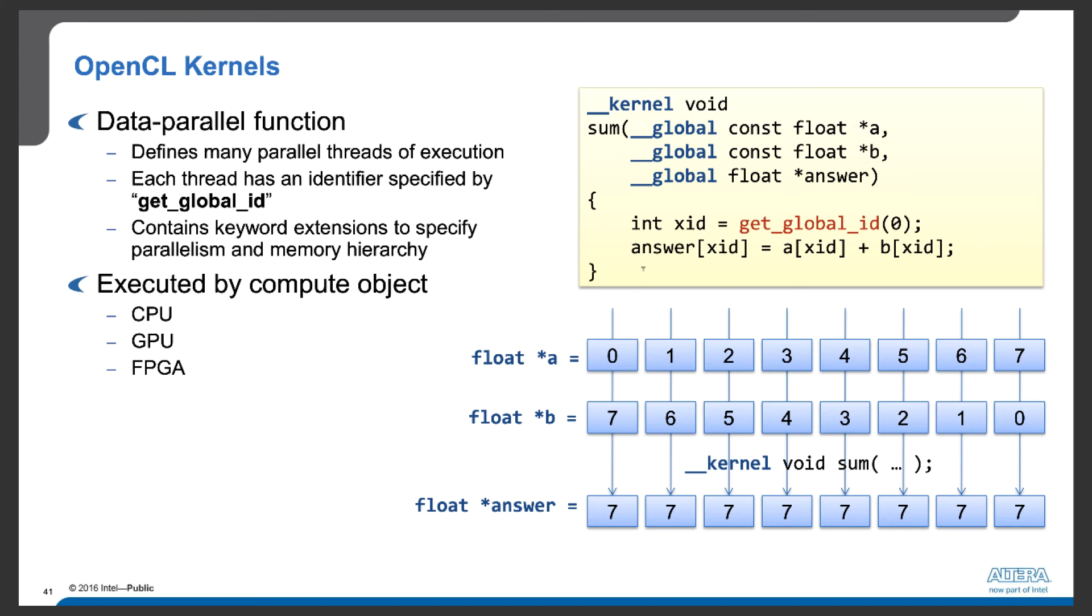In this example, the way we design a kernel is we will first get_global_id, which retrieves the identifier of this kernel function. And we use this ID to index the corresponding element pairs in vector a and b, and perform the addition.